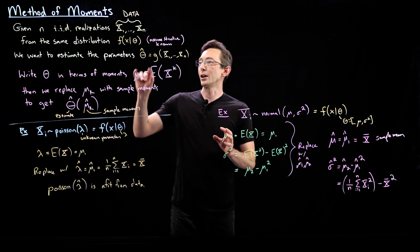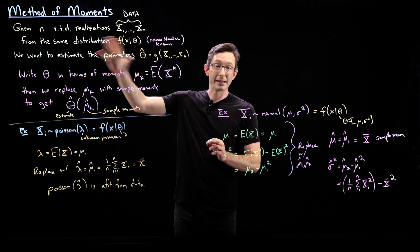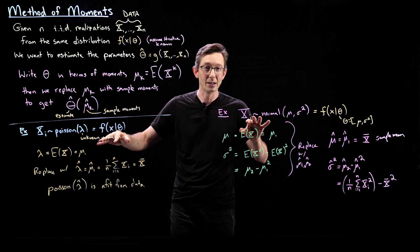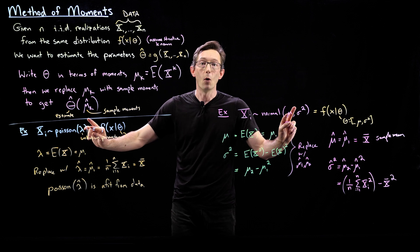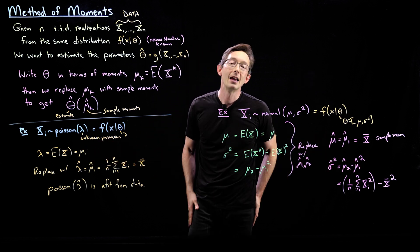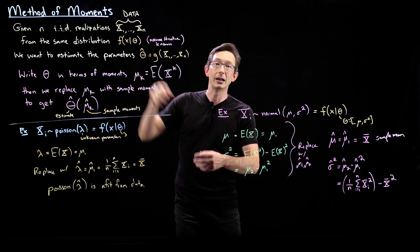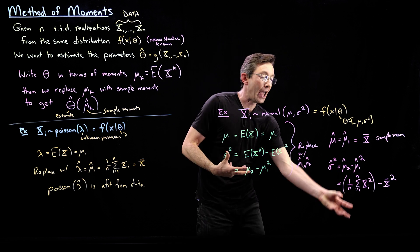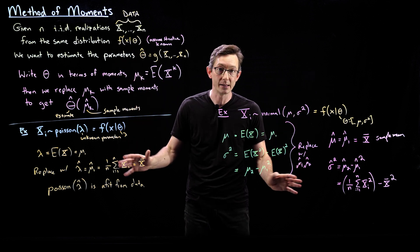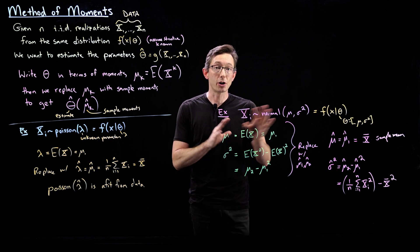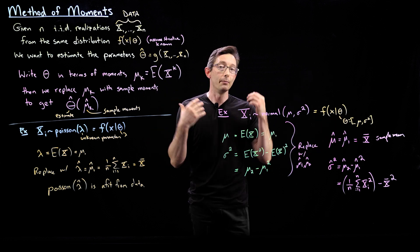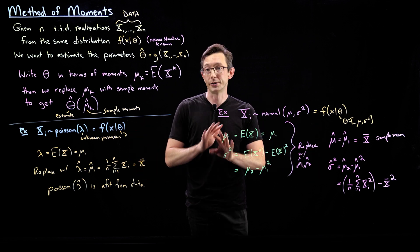Taking a step back: we're trying to find the parameters of our distribution that best describe the data. With the method of moments, we write those parameters in terms of the moments — assuming we know the distribution form — then replace those moments with sample moments from actual data, plugging them into our expressions for the unknown parameters. We'll show in a later lecture that these estimates are consistent: in the large n limit they converge to the true parameter values, though questions about convergence speed and finite-n error remain to be discussed.